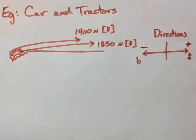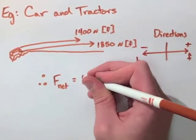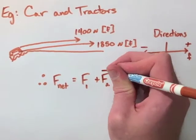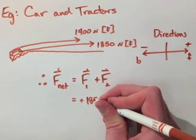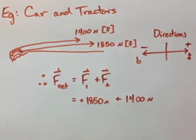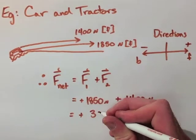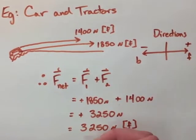Both of these vectors need to have a direction associated with them, so we make positive the forward direction and negative the backward direction. Now our final force, or our total force we call net force, is going to be force 1 plus force 2. That's going to be 1850 newtons plus 1400 newtons. When we add these two together, we get 3,250 newtons in total. It's positive, so that's 3,250 newtons forward.